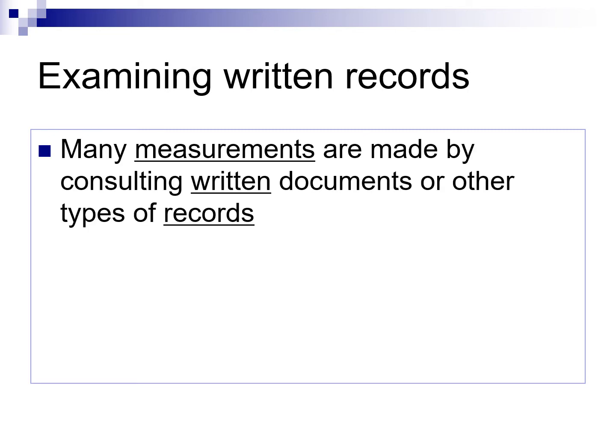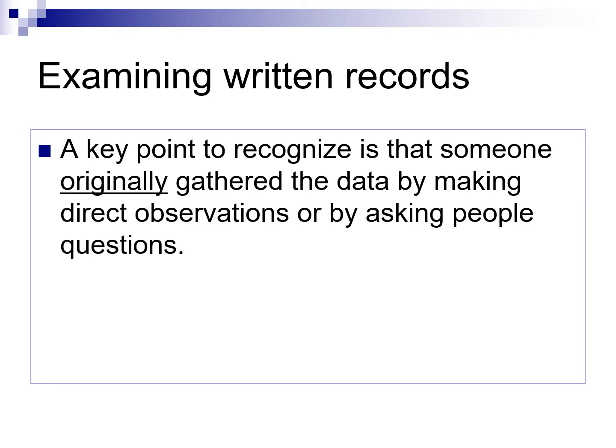We also gather information through the written record. This can be all types of institutional data that's recorded, or other types of records — it could be something like a diary or journal kept by offenders. When examining the written record, you must understand where the data is coming from. With each step, as other people interact with the data, you can lose control of it. It's best to have it go directly from the participant to the researcher.